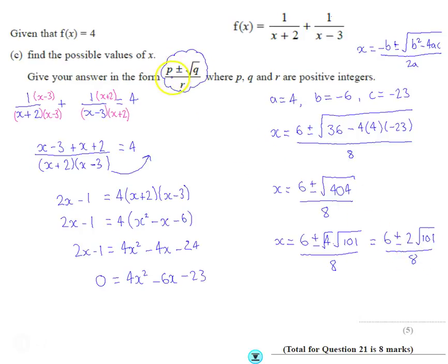Now if you just compare this to what they've got, they've got one number before the plus or minus, a single square root, no number outside it, and a single number underneath. So if you now spot there's a factor of 2 here, we can divide all of these things by 2, so it gives us 3 plus or minus the square root of 101, all divided by 4. And then our p will be worth 3, our q, the thing inside the square root is worth 101, and our r is worth 4.